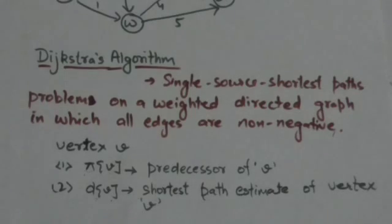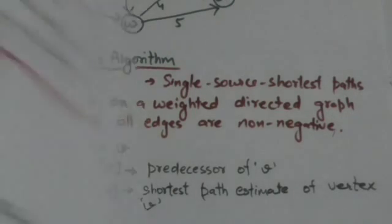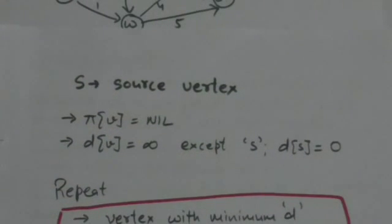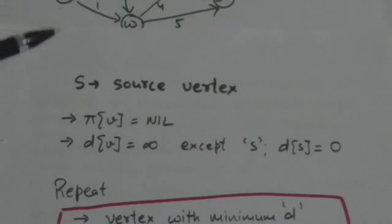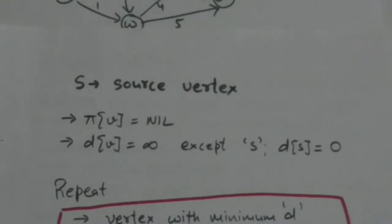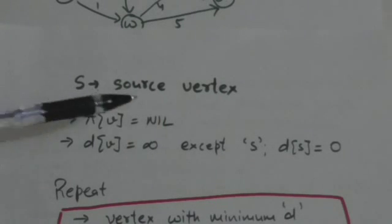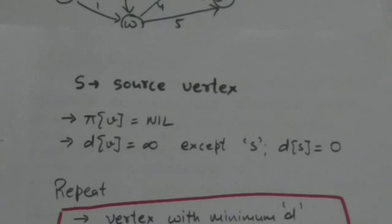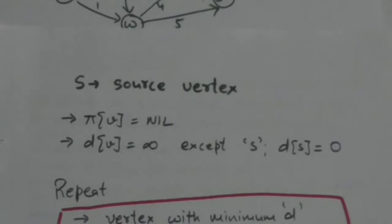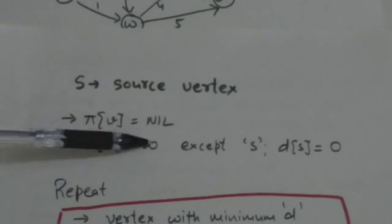Suppose vertex s is the source vertex of the graph. We have to find the shortest path from vertex s to each vertex of the graph using Dijkstra's algorithm. First, we set the value of pi for each vertex to nil. The value of d for each vertex except source vertex s is set to infinity, and d(s) is set to 0.